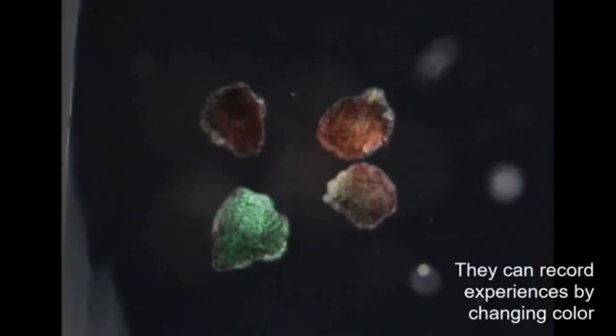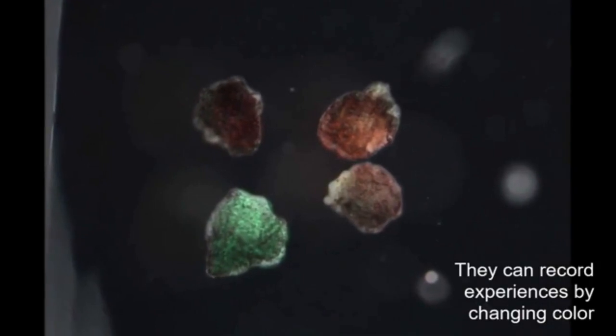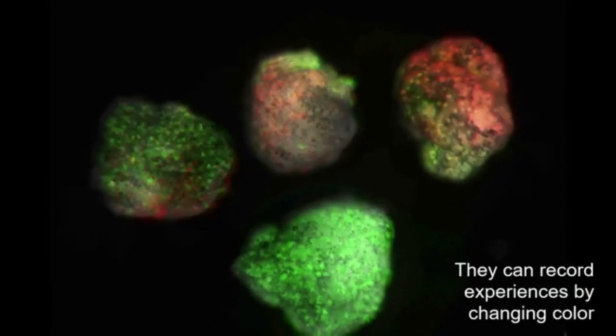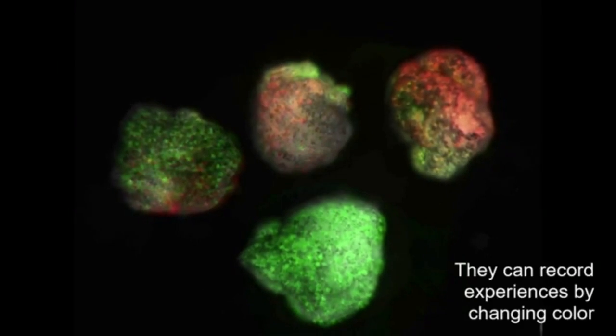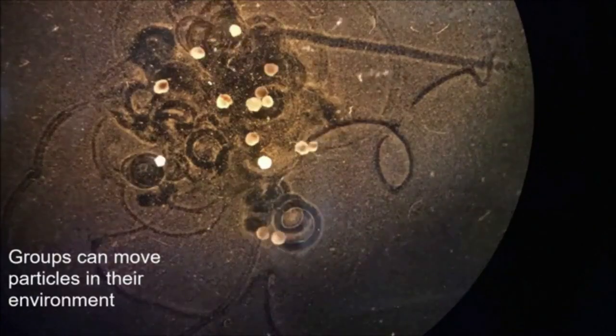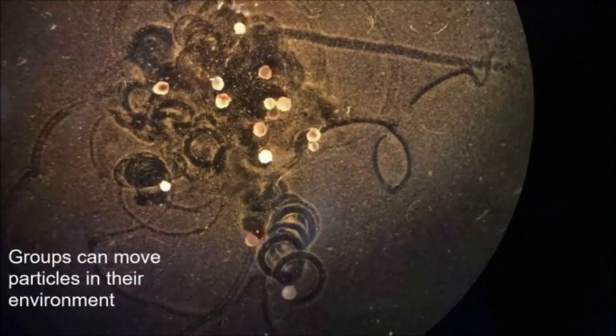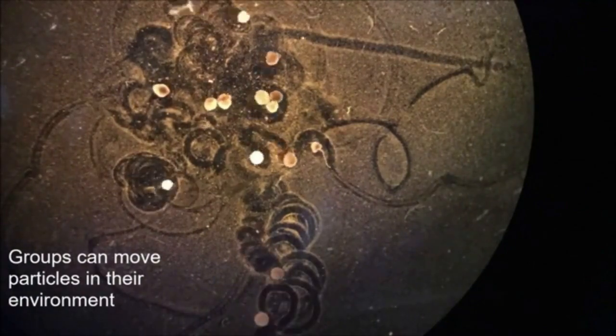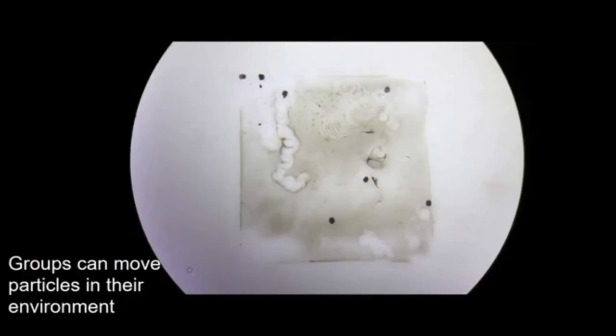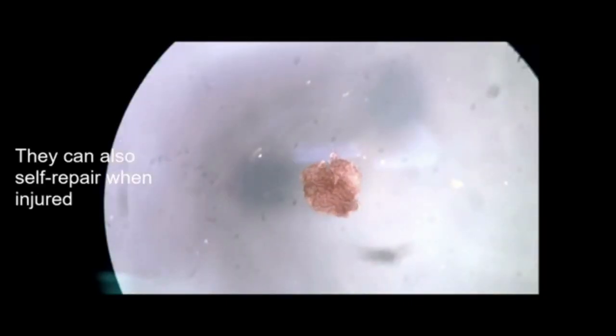In a way, the xenobots are constructed much like a traditional robot. Only, the researchers use cells and tissues rather than artificial components to build the shape and create predictable behavior. On the biology end, this approach is helping the researchers understand how cells communicate as they interact with one another during development and how they might better control those interactions.